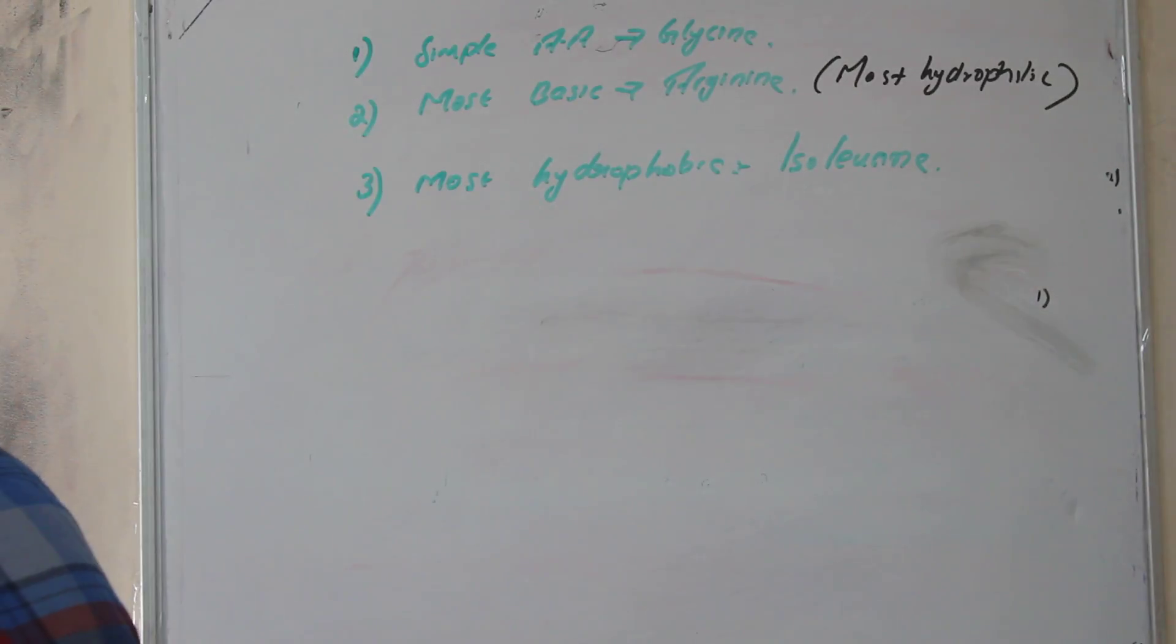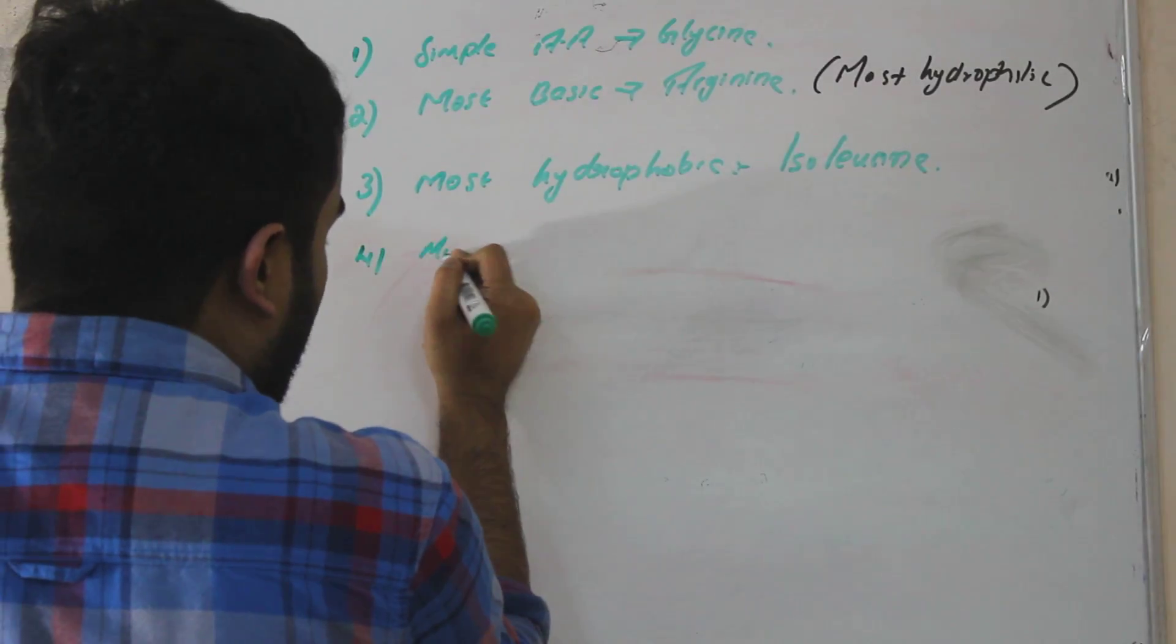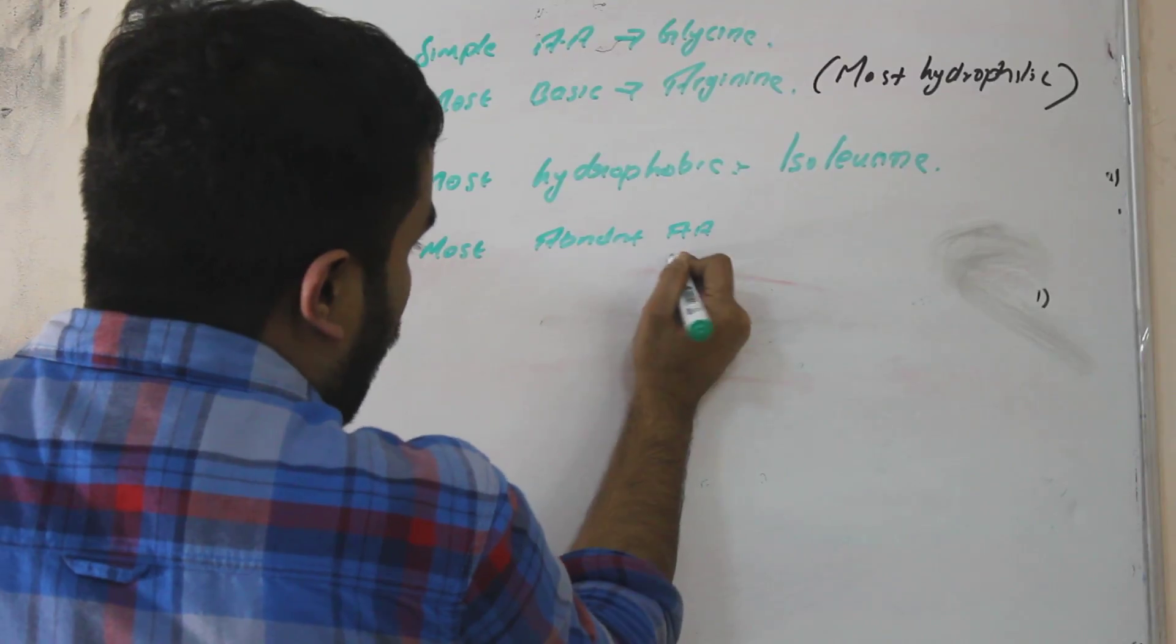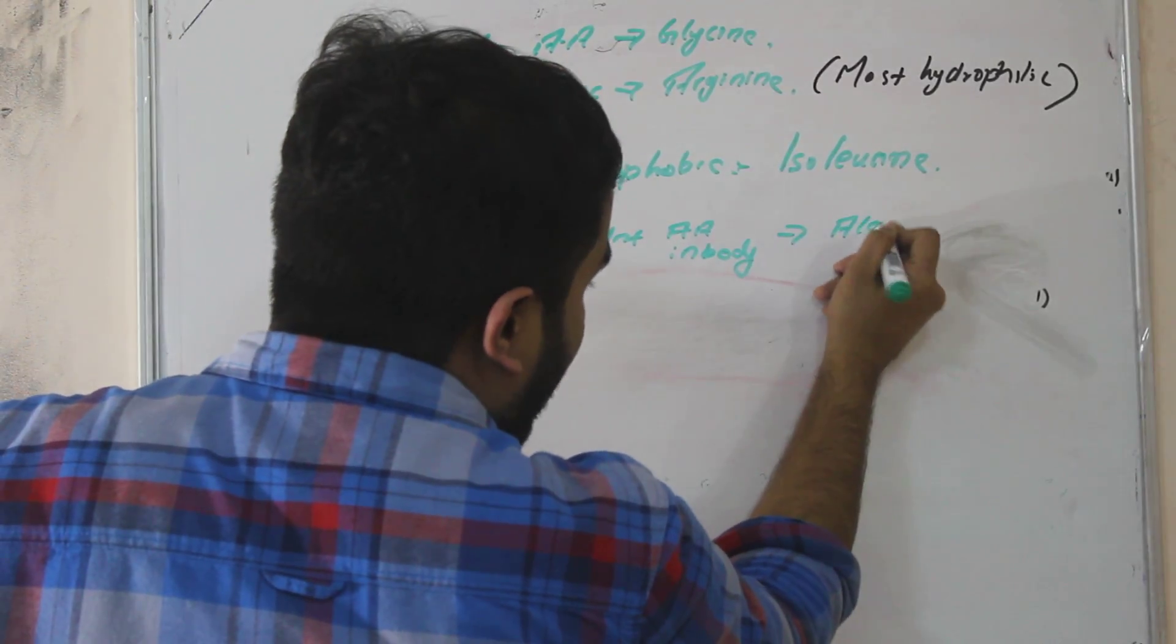Most abundant amino acid in our body, total body they are asking, that is alanine. Most abundant or most common.